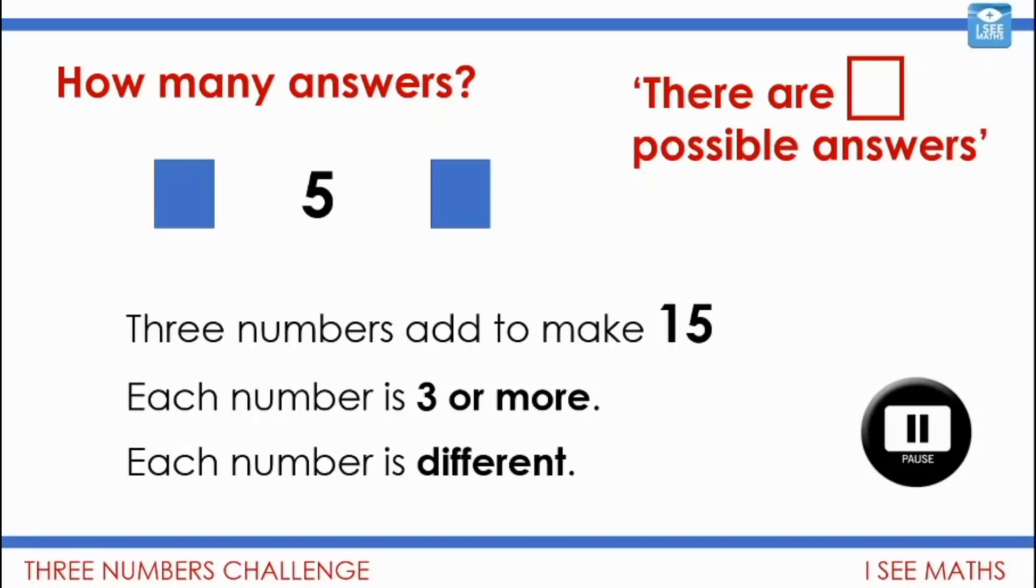So let's have a look. Well we could have had three, five and seven. I've chosen three to start with because each number is three or more. I don't want to go any smaller than three. Are there any other possible answers? Well four, five and six consecutive numbers again there. The four and six make 10 and add the five is 15. Well my other number bond to 10 I guess is five and five but then I would have three fives and all the numbers have to be different. So there are two possible answers to that question. We started with three, five and seven and then four, five and six. There are two possible answers.